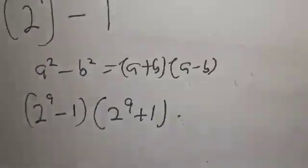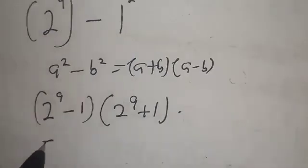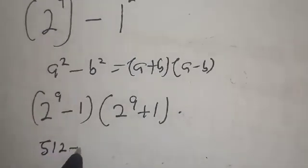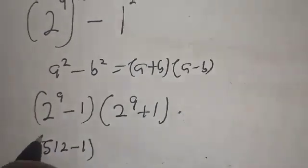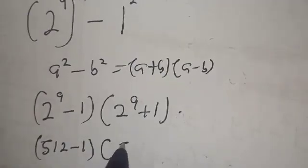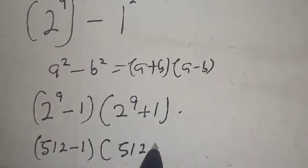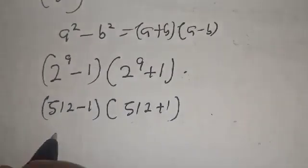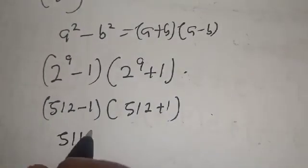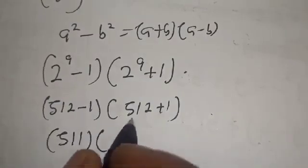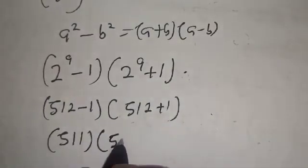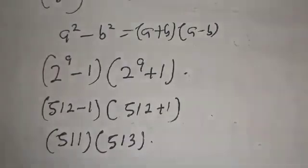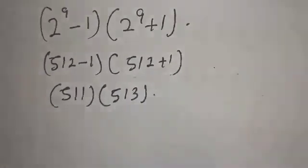2^9 is 512. This is 512. 512 minus 1 multiply by 512 plus 1. Now 512 minus 1 is 511, multiply by 512 plus 1 is 513.